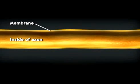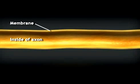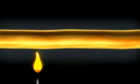This length of axon can be likened to a piece of fuse. The burning match under the axon represents an electrical event that generates an action potential. This event normally takes place at the axon hillock.